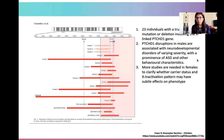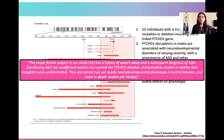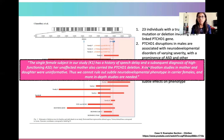The authors commented that more studies are needed in females to clarify whether carrier status and X inactivation pattern may have subtle effects on phenotype. There was only one female subject in the entire study who showed the deletion in our region of interest. The single female subject K1 had a history of speech delay and a subsequent diagnosis of high-functioning autism spectrum disorder. Her unaffected mother also carried the PTCHD1 deletion. X inactivation studies in mother and daughter were uninformative, so a subtle neurodevelopmental phenotype in carrier females could not be ruled out.